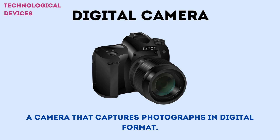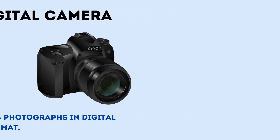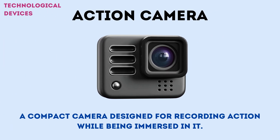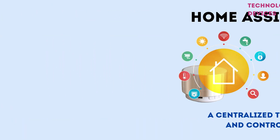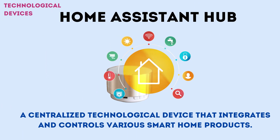A digital camera is a camera that captures photographs in digital format. An action camera is a compact camera designed for recording action while being immersed in it. A smart TV is a television set with integrated internet capabilities. A home assistant hub is a centralized technological device that integrates and controls various smart home products.